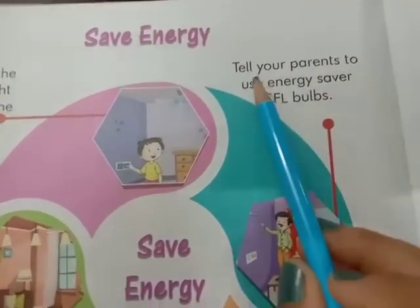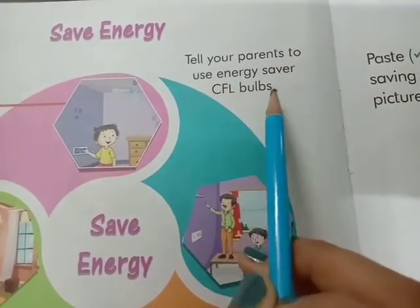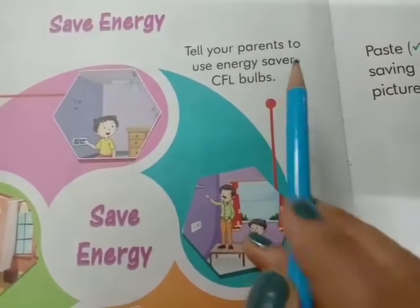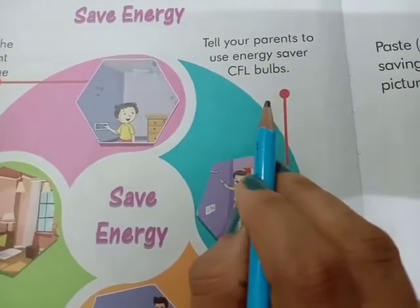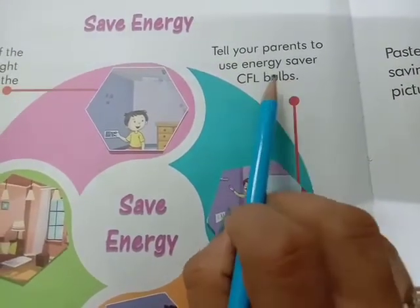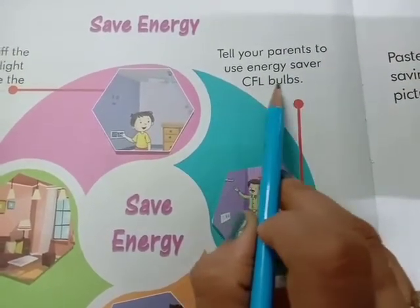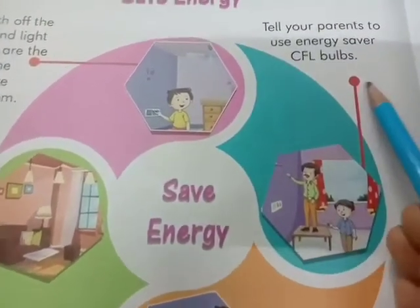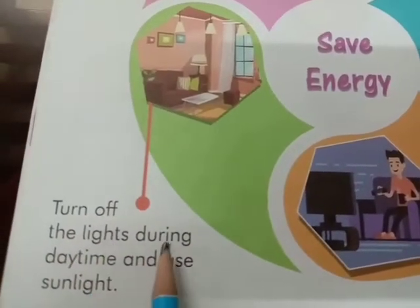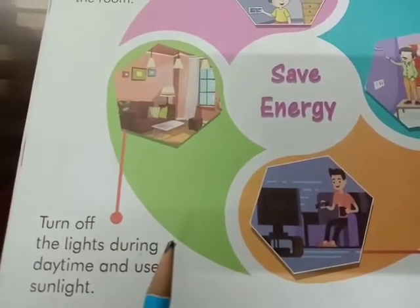Tell your parents to use energy saver CFL bulbs. We should use these types of CFL bulbs — you can see this picture related to CFL. Also, turn off the lights during daytime and use sunlight instead.